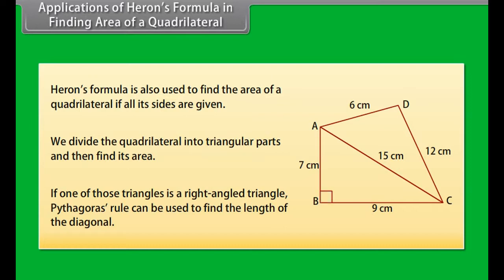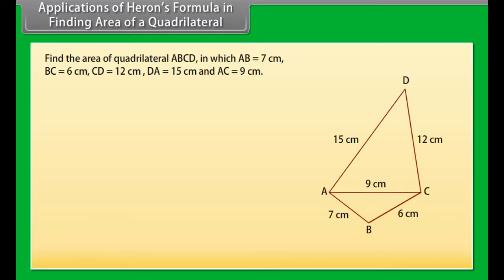Heron's formula is also used to find the area of a quadrilateral if all its sides are given. For that, we divide the quadrilateral into triangular parts and then find its area. If one of those triangles is a right-angled triangle, Pythagoras' rule can be used to find the length of the diagonal.